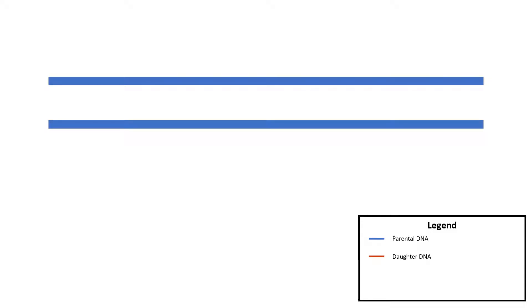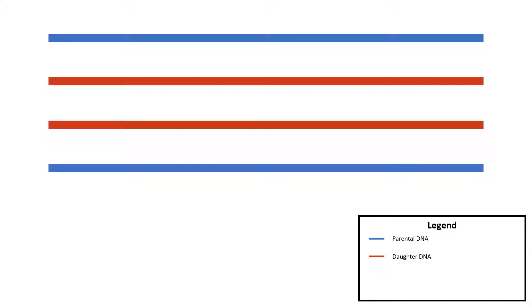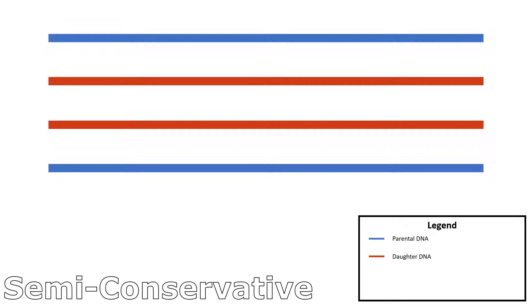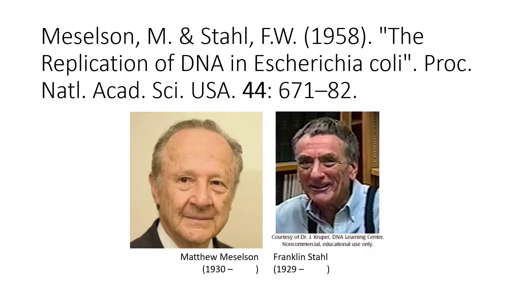In my previous video, I mentioned that during DNA replication, the parental DNA is unwound into two separate strands, with each strand as a template for the synthesis of new DNA. The resulting two daughter DNA molecules would have one strand originally belonging to the parent and the other newly synthesized. Such a replication is known to be semi-conservative, as half of the original material is present in each daughter DNA molecule.